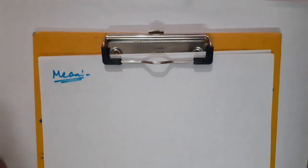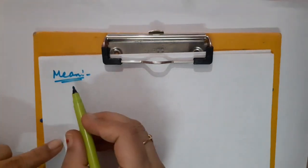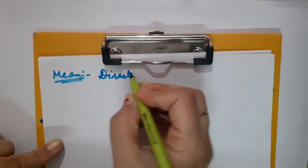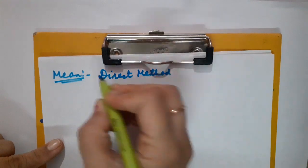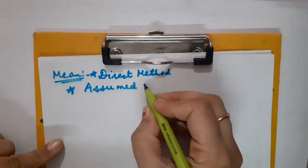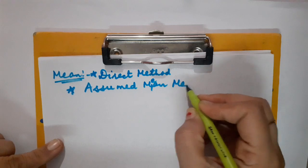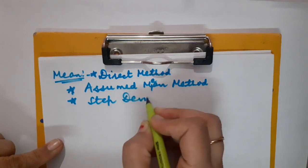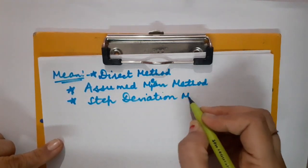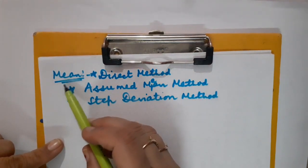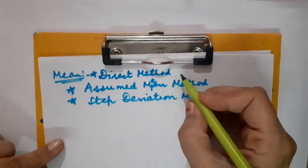In class 10th, since we deal with grouped data, there are three ways to calculate mean: number one — direct method; number two — assumed mean method; and number three — step deviation method. Today I am going to explain how to calculate the mean for grouped data using the direct method.